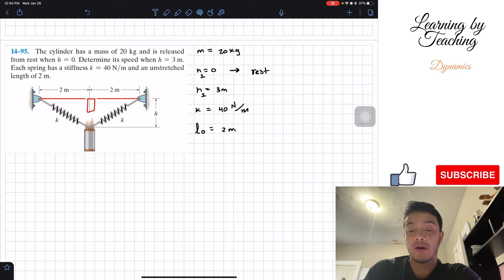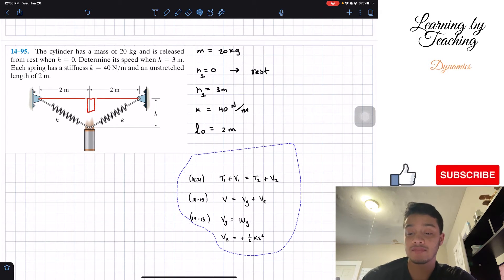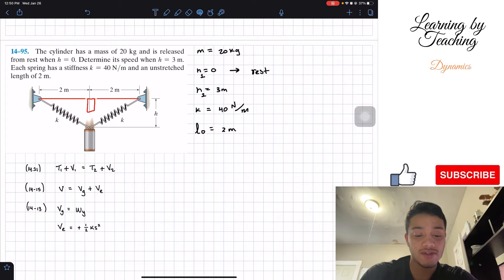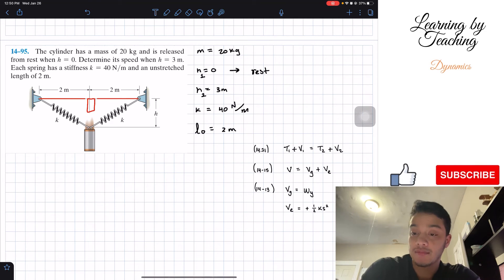In order to solve this problem, we're going to utilize our chapter 14 equations, mainly our conservation of energy equations. I'm talking about this one: T1 plus potential one has to equal T2 plus potential of point two. I have the equation for potential and each individual potential category here.